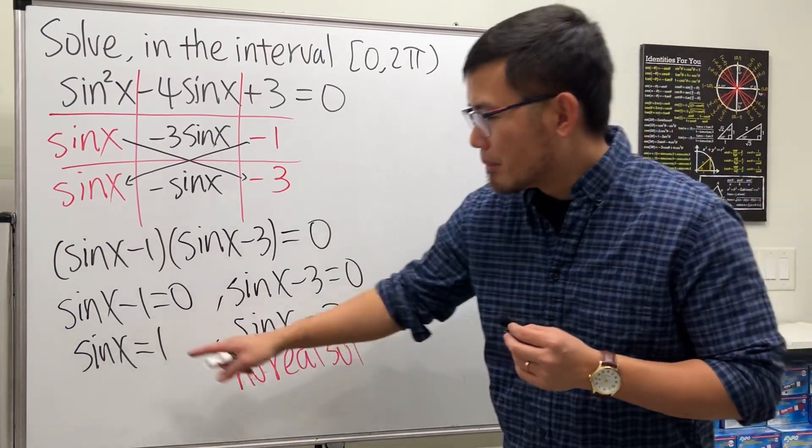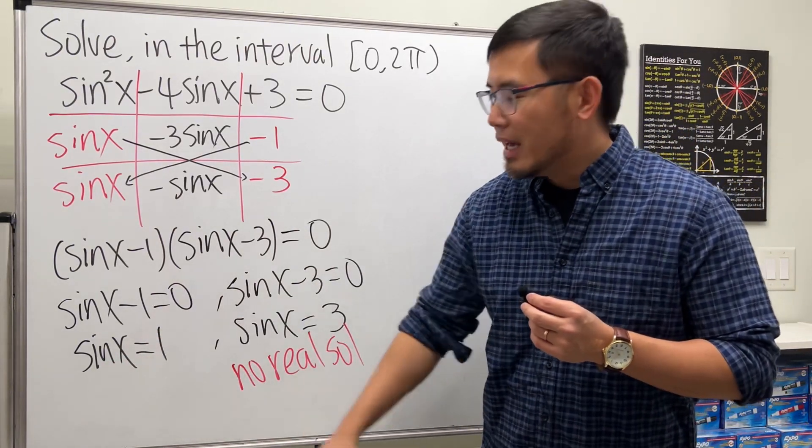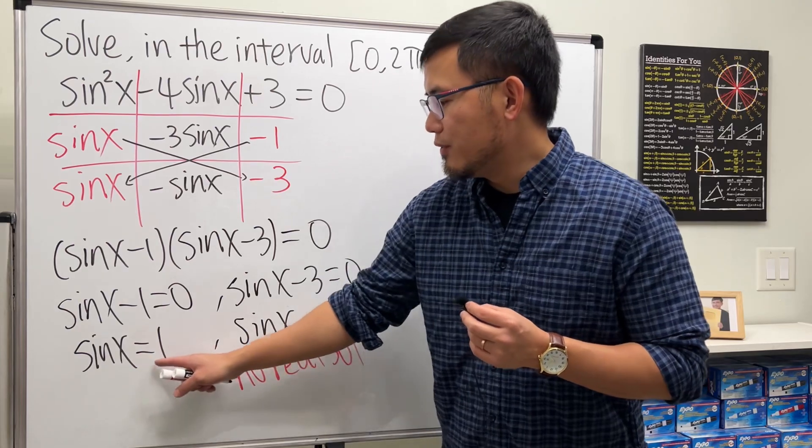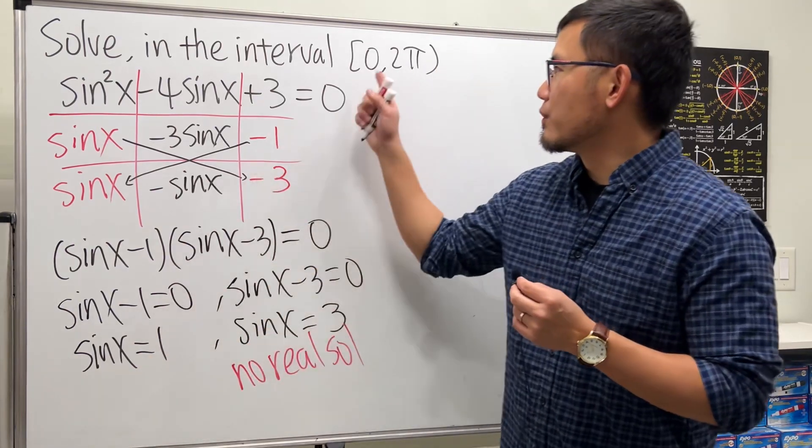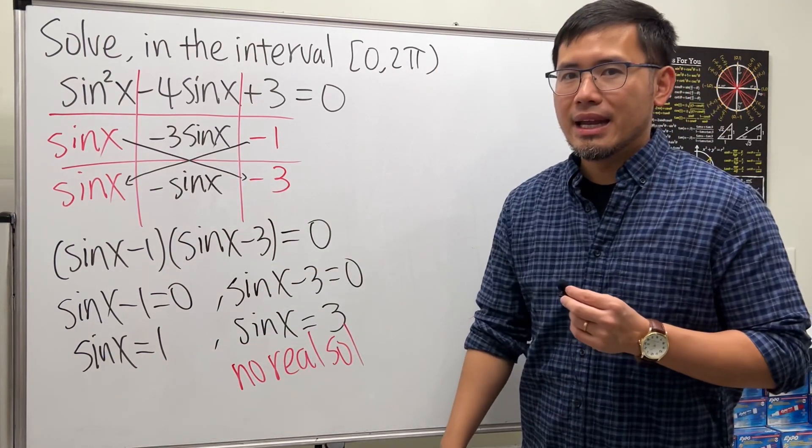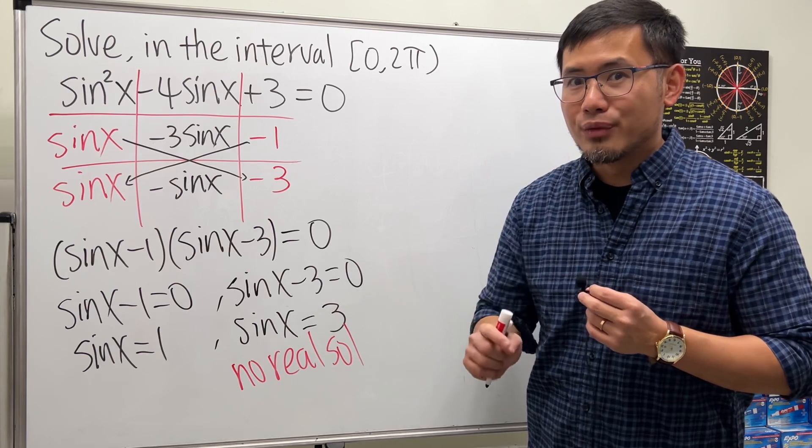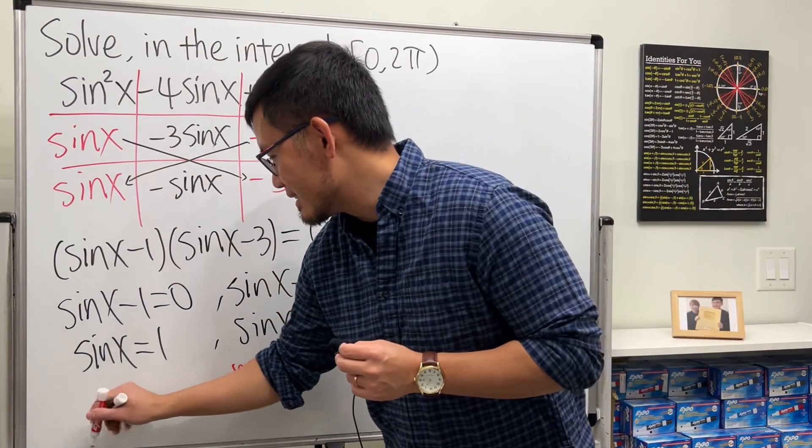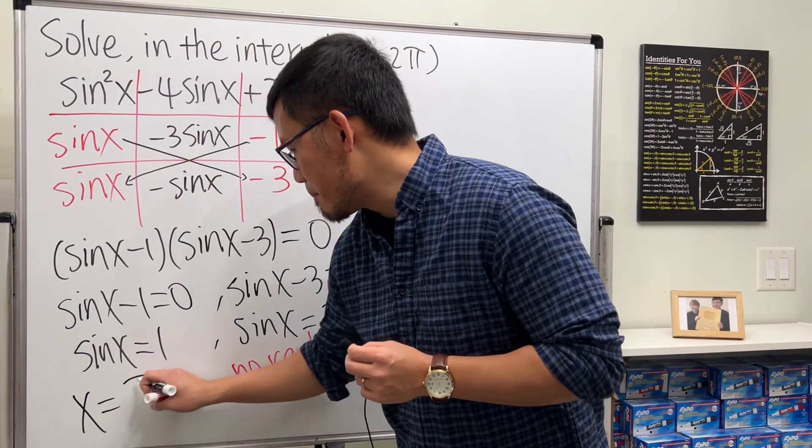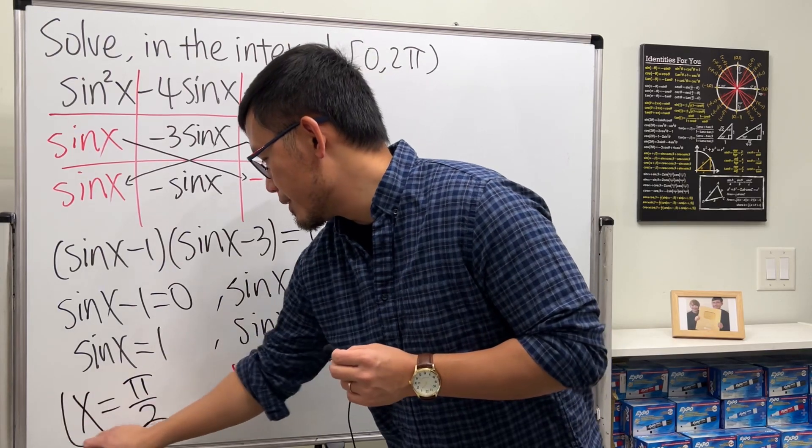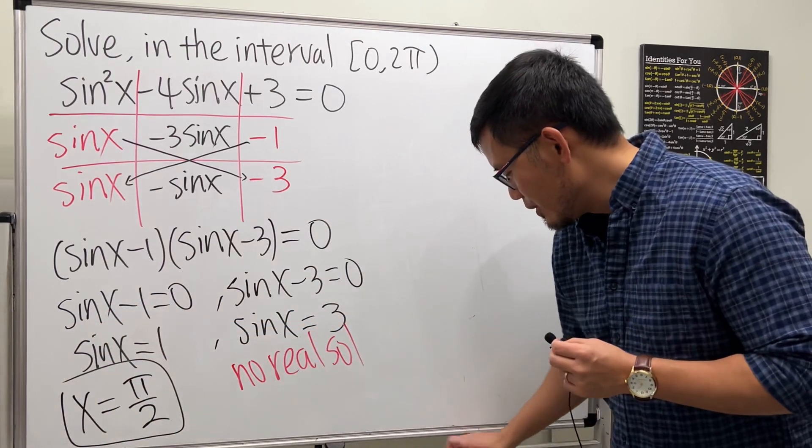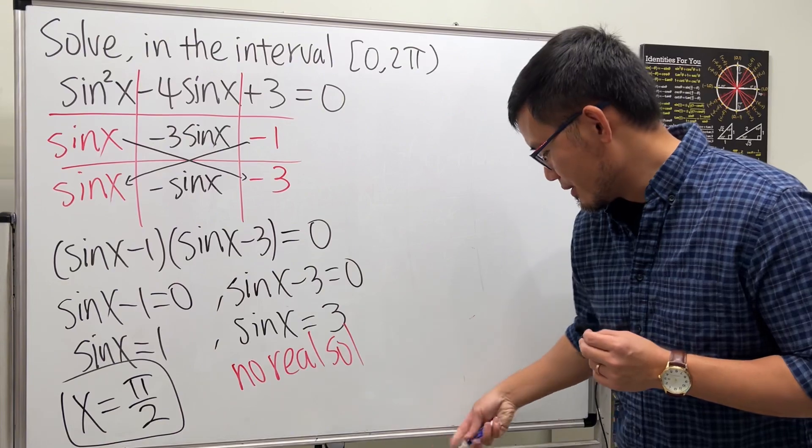And you are good to go. But for this right here, sine of what angle will give you 1? And the angle is from 0 to 2 pi. The answer is pi over 2, and that's the only one. So just real quick let's review the unit circle.